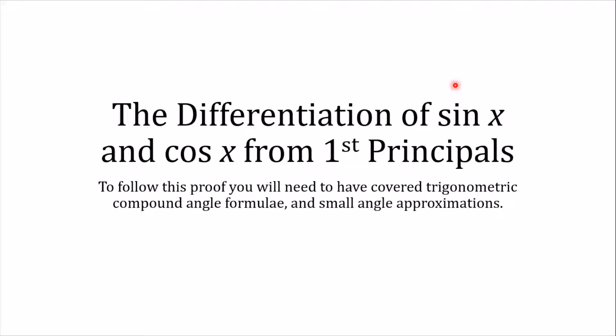So differentiating sine and cosine is actually something that you met quite a long time ago, and you already know that the derivative of sine x is cosine x and the derivative of cosine x is negative sine x, but we never actually looked at how we prove those derivatives from first principles. And the reason we didn't do it earlier on is because to follow the proof you need some more recent education basically.